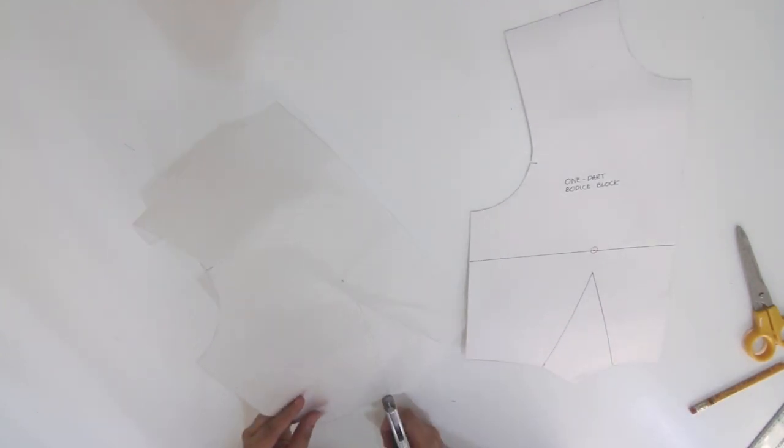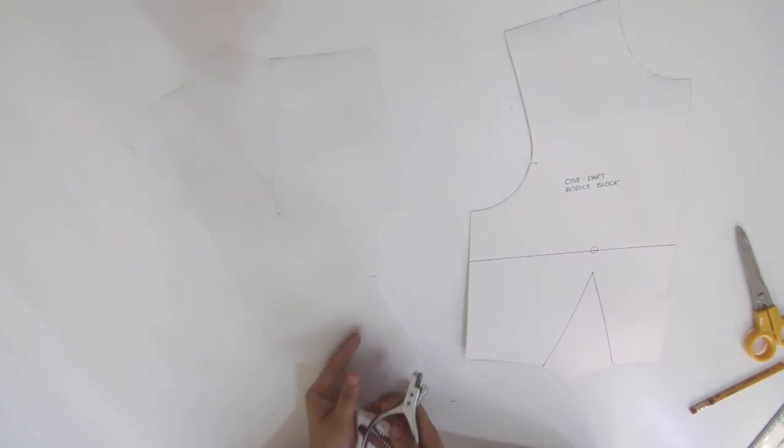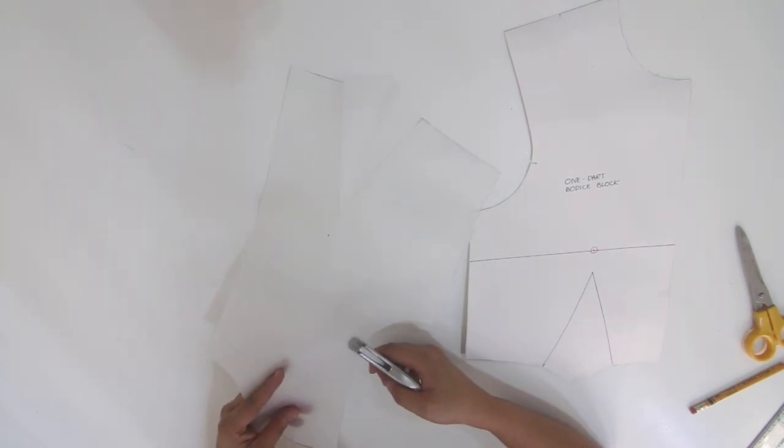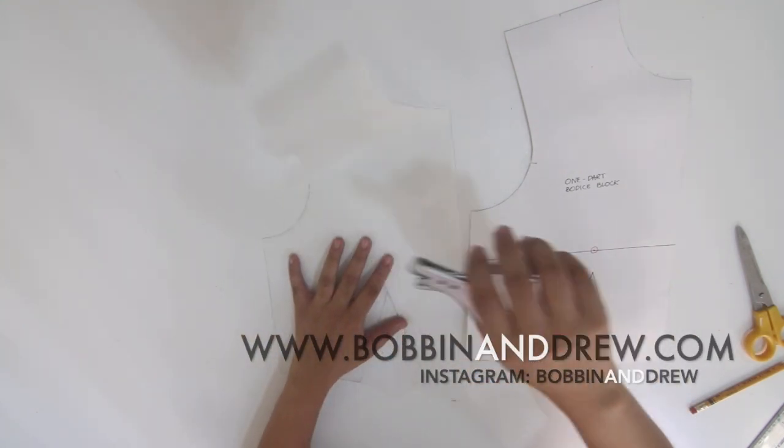I have now manipulated the two dart bodice block into the waist dart. Here I just need to notch the dart legs and the armhole. If you find this video helpful, let me know by liking this video and subscribing to my channel. Thank you for watching!